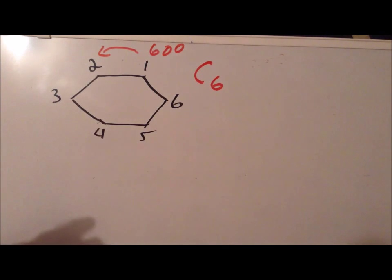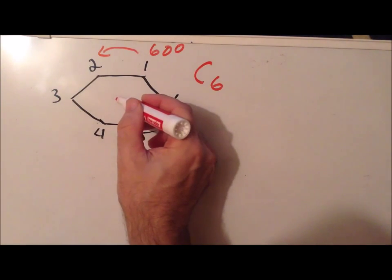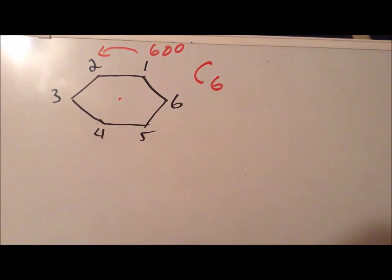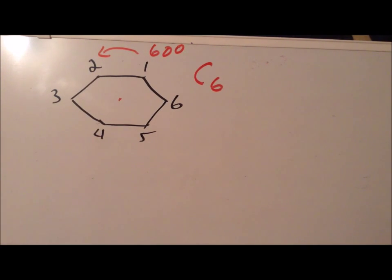360 divided by 6 gives us 60 degrees, so that's one of the rotations available. When we rotate the shape, it rotates around a center point. If we consider this center point to be part of the hexagon, it is the one point of the entire shape that does not move during the rotation. We're interested in motions that leave at least one point fixed, and typically that point will be the center.